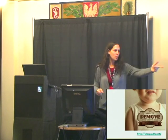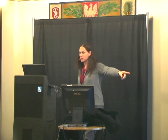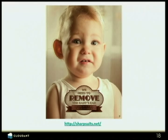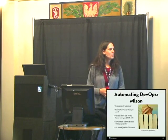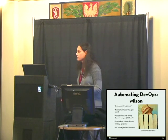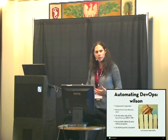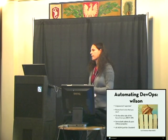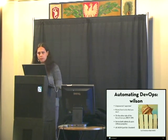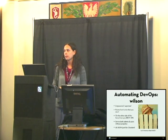Somebody comes in and says, we need to remove this baby's ear — I just found this this morning, it's some charity ad campaign in Ireland that made fun of crazy requests. So what we decided to do was take the next step in automating things. We created a project called Wilson, named after Earl Hindman's character on Home Improvement, Tim Allen's sitcom from the 90s. He's sort of this empowered superman who knows how to do what you don't. He's an entirely REST API, a great match for our technology, serving both admins and users without prejudice, and all in JSON.